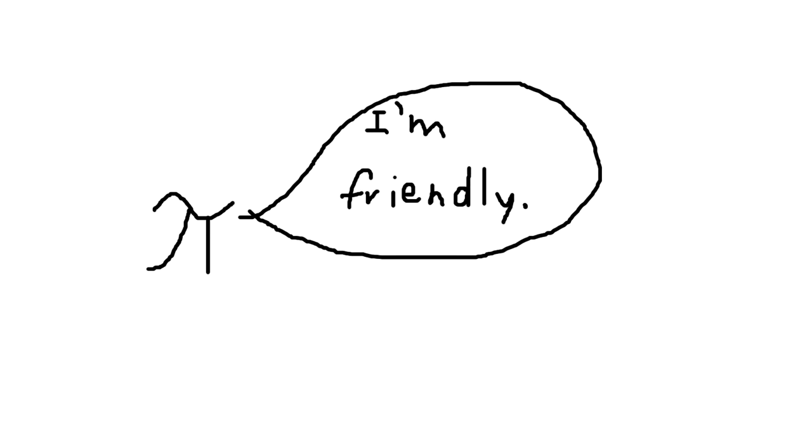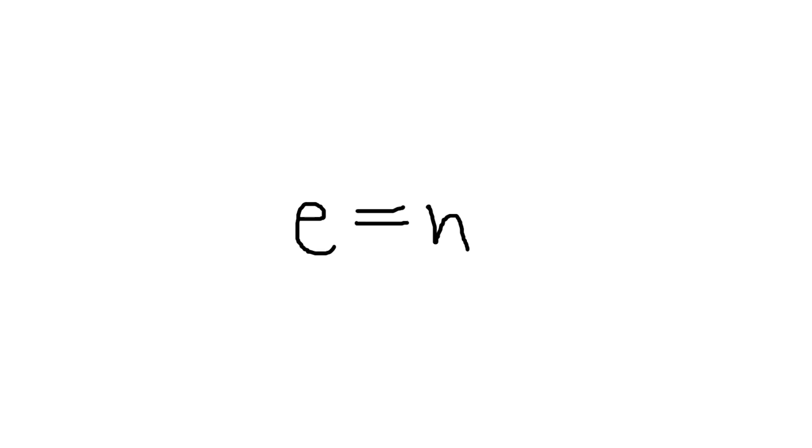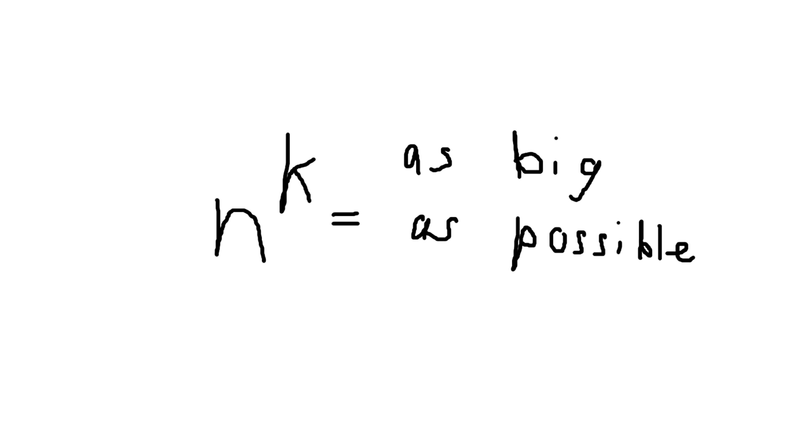Anyways, remember Pi? Here's e, his brother. e is the only number n such that the sum of k n's is a fixed r, and the product of k n's is a maximum given this fixed r. Okay, maybe that was a lot to think about.